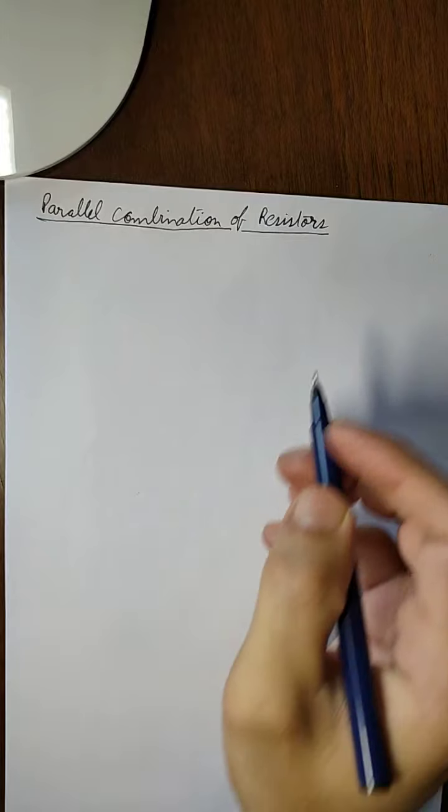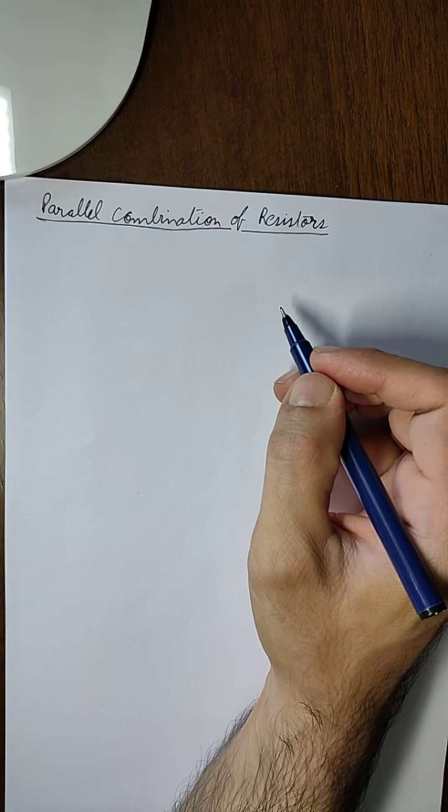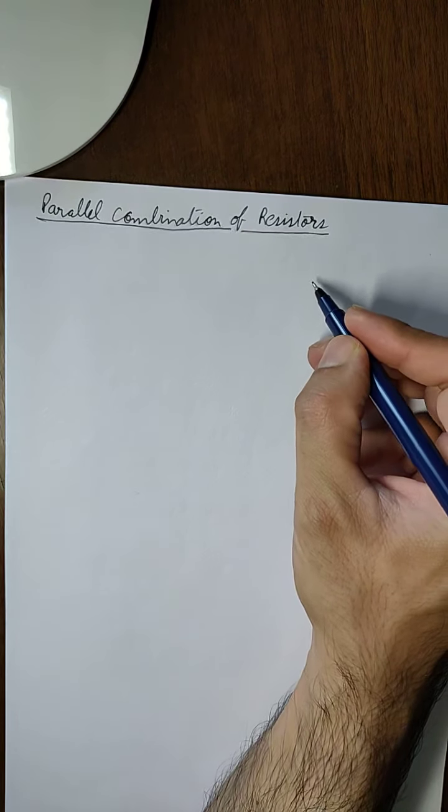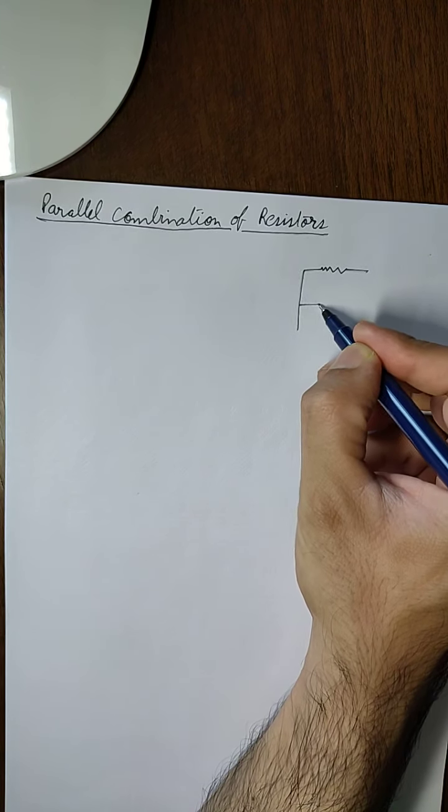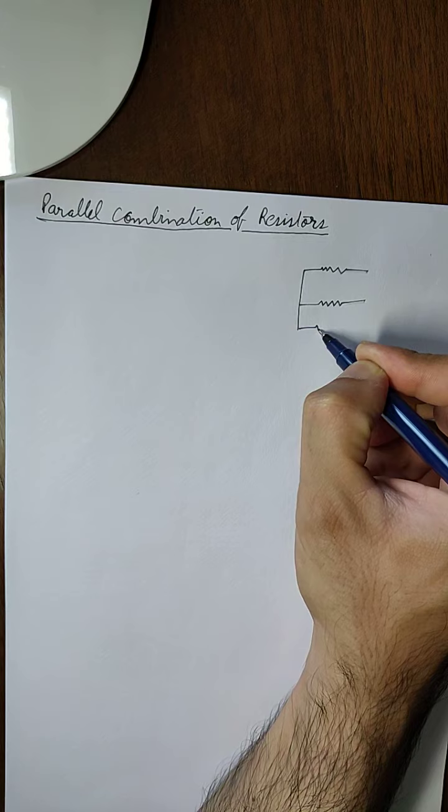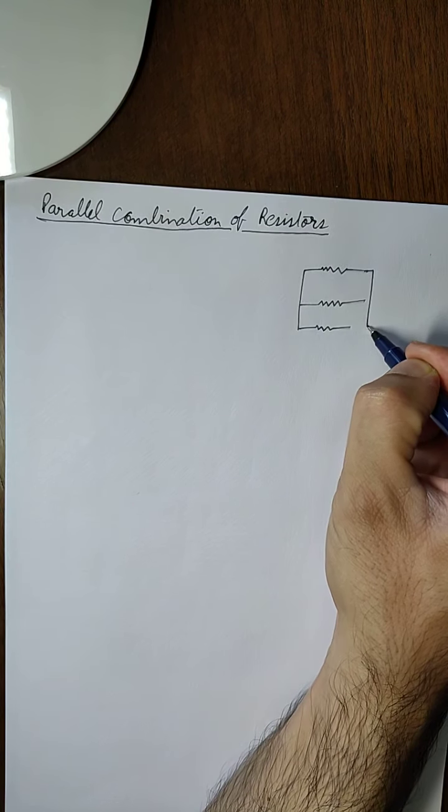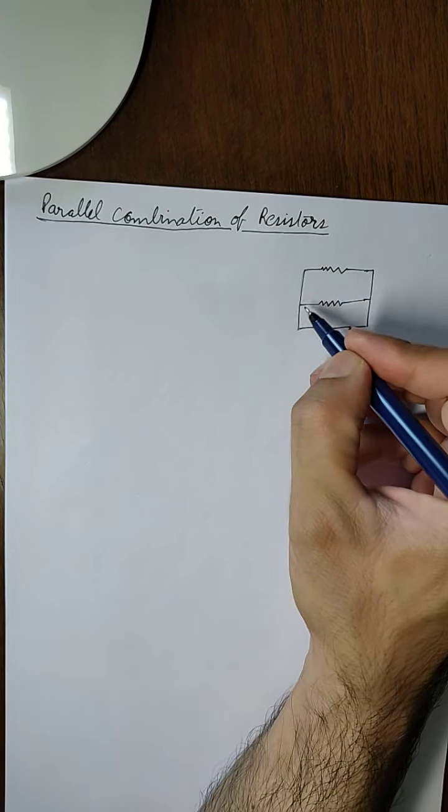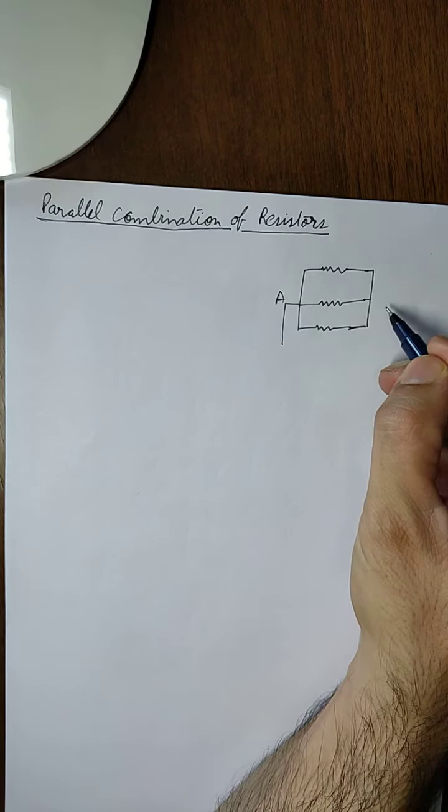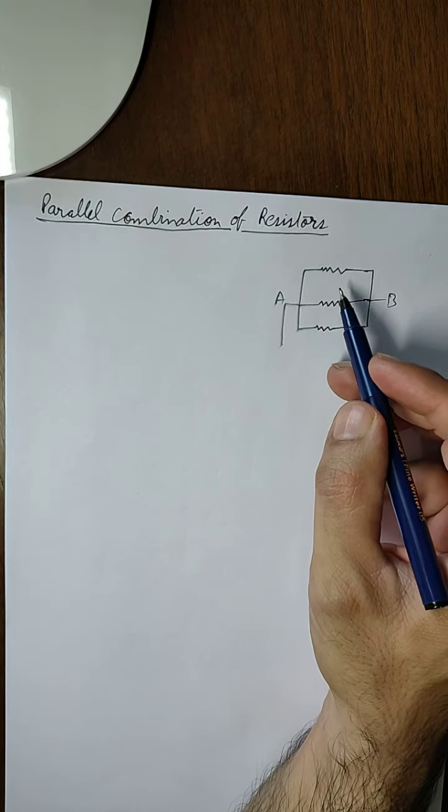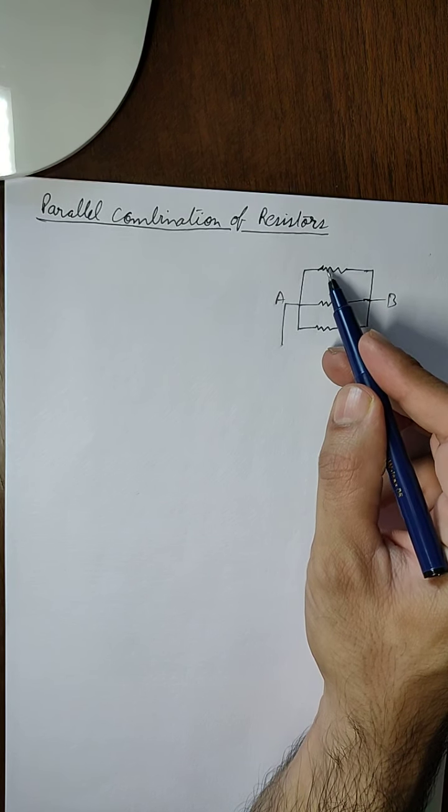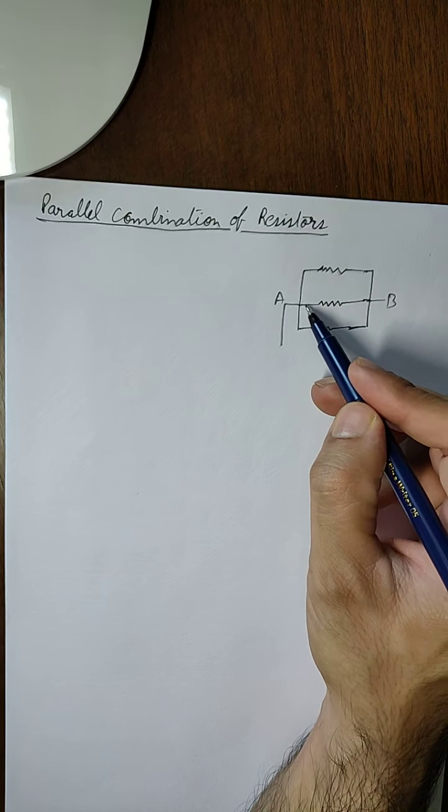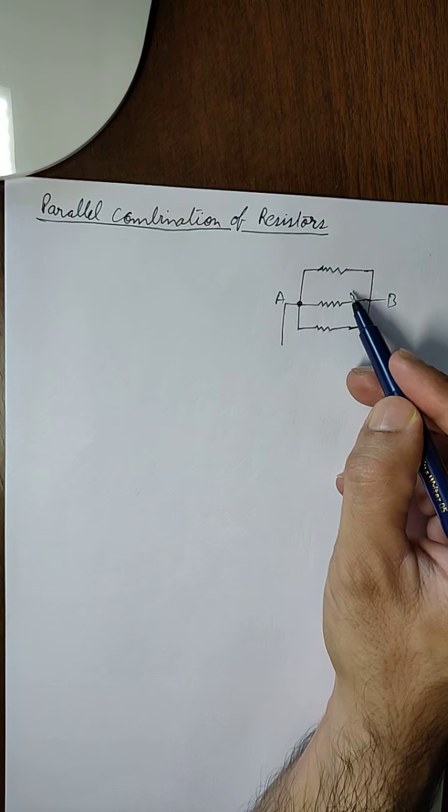Now let us study the parallel combination of resistors. Again, we have three resistors R1, R2, and R3 combined between terminals A and B such that the left terminal of each resistor is connected to the same point, and all the right terminals are connected to a single point.